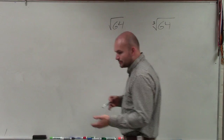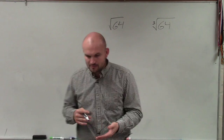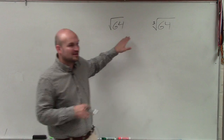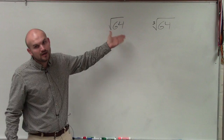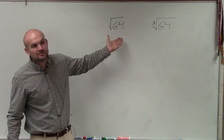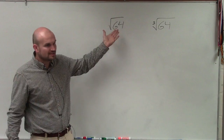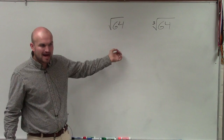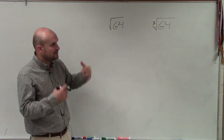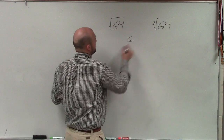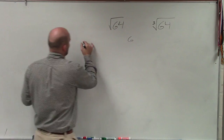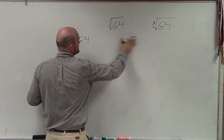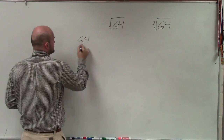So the first thing we've got to do is what we talked about: prime factorizing. Now obviously, guys, hopefully you understand that the square root of 64 is going to be 8. But let's break it down and just kind of see where that comes from again. So if I had 64, what we do is we prime factor it.